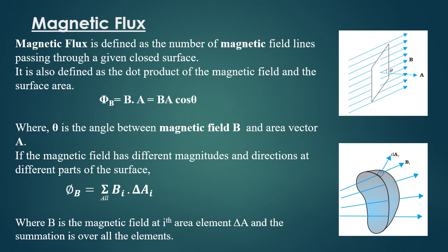Magnetic flux is now defined as the number of magnetic field lines passing through the given closed surface. Mathematically, magnetic flux phi is equal to the dot product of magnetic field and the area vector.